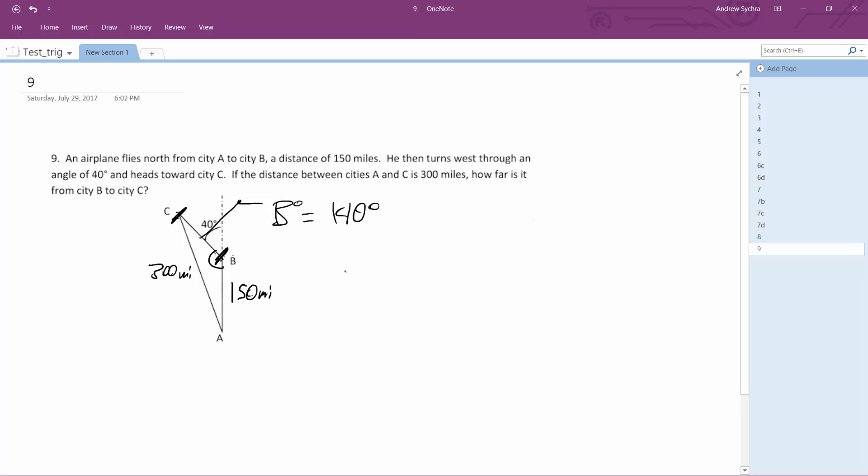So sine of 140 over 300 is equal to sine C over 150. So 300 sin C is equal to sine of 140 times 150. So C is going to be equal to arc sine of 140 times 150 over 300. And angle C is going to be equal to 18.75 roughly.